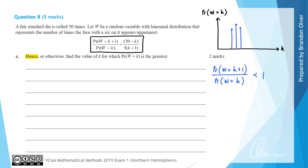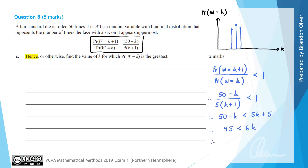Replacing the symbolic ratio with our algebraic result: (50 minus K) divided by 5(K plus 1) must be less than 1. Multiplying both sides by 5(K plus 1) gives 50 minus K less than 5K plus 5. Collecting K terms and subtracting 5 from both sides gives 45 less than 6K. Dividing both sides by 6, K must be greater than 7.5.